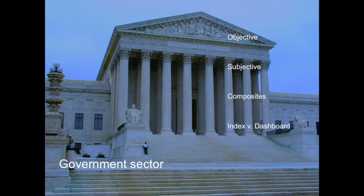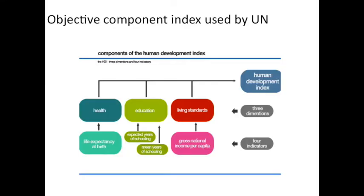Now let's go on to the government sector — really the NGO, non-governmental organization, and government sector — because a lot of NGOs are having a big impact on how governments measure well-being. We're going to look at one example: an objective component index that takes several different single indices and combines them. This is the Human Development Index, which uses objective indicators and is used by United Nations organizations and other entities to identify policies and interventions for different peoples in different countries.